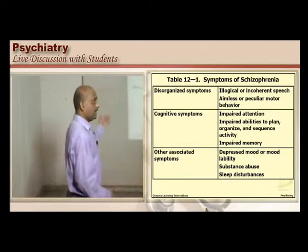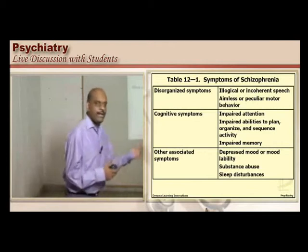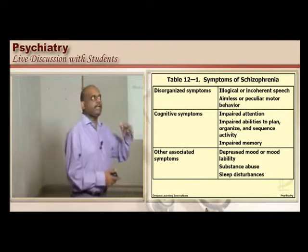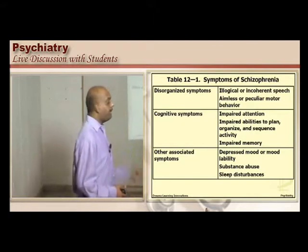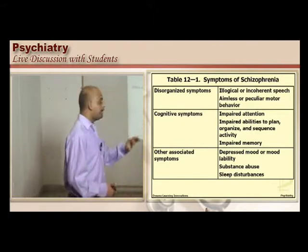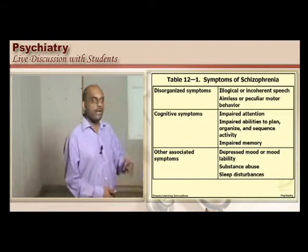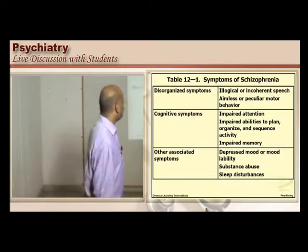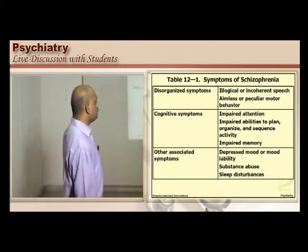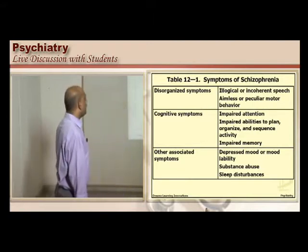Some symptoms are associated with learning and cognition. The cognitive symptoms of schizophrenia include impaired attention, impaired ability to plan, organize and sequence activity, and impaired memory. Sometimes schizophrenia can also be associated with mood instability, substance abuse, and insomnia.